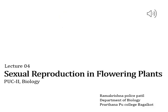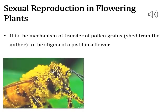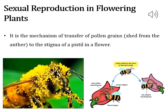Hello everyone, welcome back to the fourth session of sexual reproduction on flowering plants. Pollination is the transfer of pollen grains from the anther to the stigma of a pistil. The pollen grains are transferred from anther to stigma through the style, and here both male and female are non-motile.